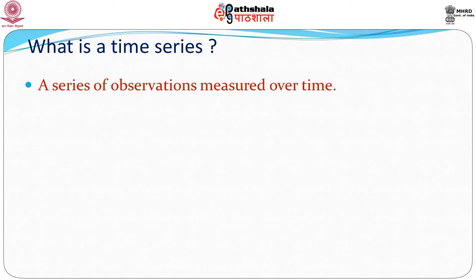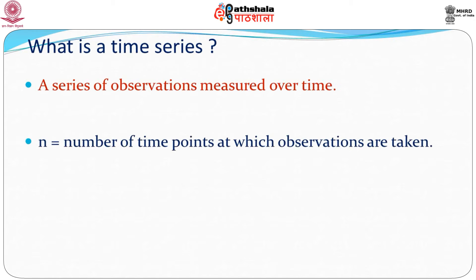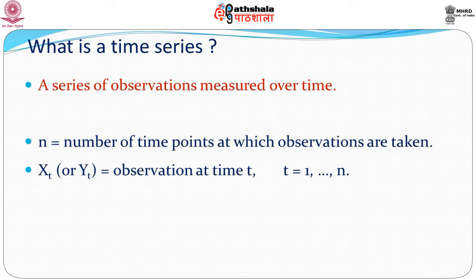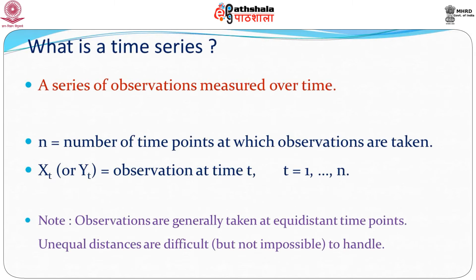Let us begin by looking at what a time series is. A time series is a series of observations measured over time. Suppose we have n number of points at which the observations are taken, and we will denote by either x_t or y_t the observation at the t-th time point, where t goes from 1 to n. Observations are generally taken at equidistant time points; unequal distances are difficult but not impossible to handle, but in this lecture we concentrate only on equidistant time points.